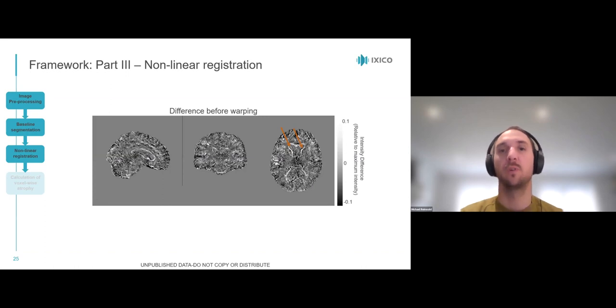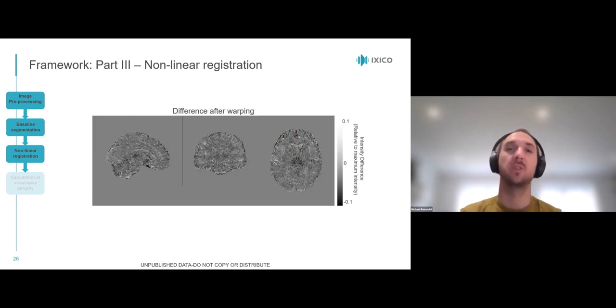The difference before warping is shown here. You can see the previously highlighted area is bright-white, meaning a relatively large difference in intensity. And now the baseline image is being warped, and eventually the difference between the two images is minimized. There are now overall less dark black or bright white areas, which would indicate large intensity differences.